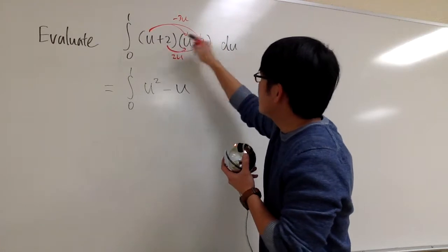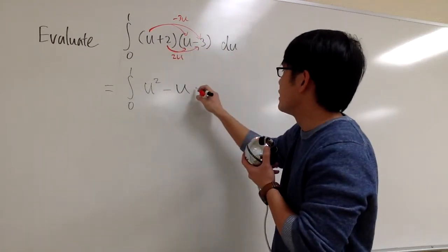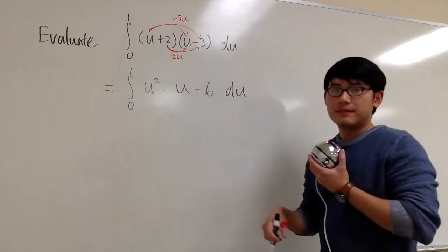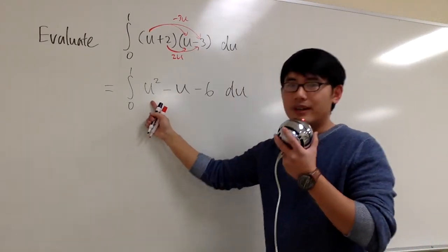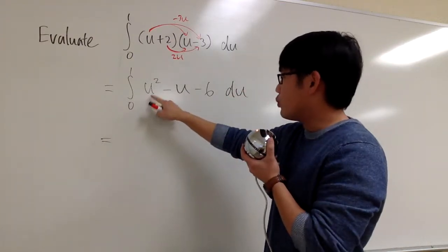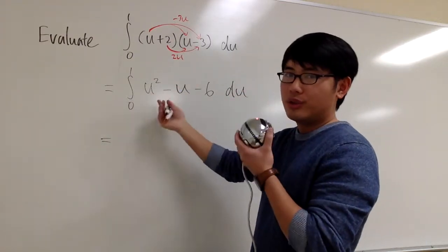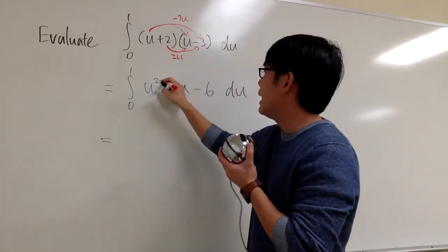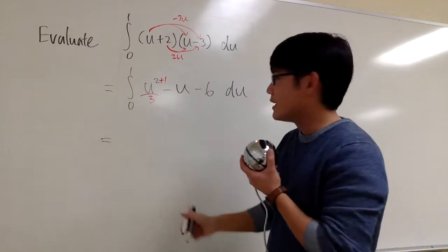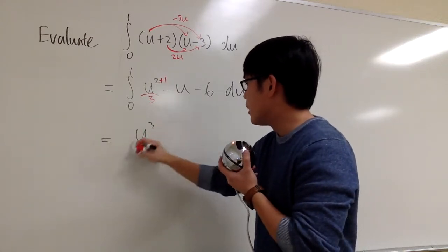At the end, positive 2 times negative 3, that's, of course, negative 6. Put the du on the side. This part right here is the part that we have to do the anti-derivative first. So derivative of what would be u to the second power? Do the power rule backwards. Add 1 divided by 3, divided by 2 plus 1, which is 3.